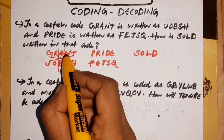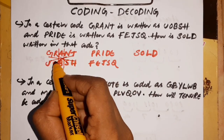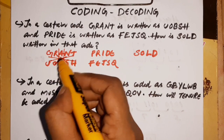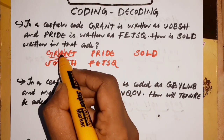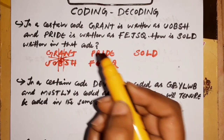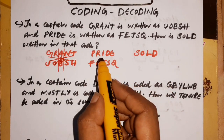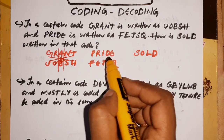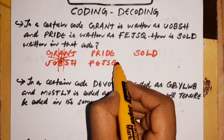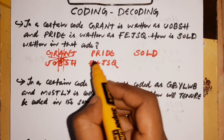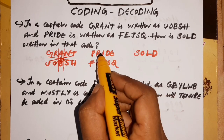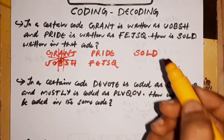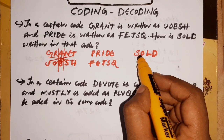That gives N. The next letter is O, and then B. So this is simple. For PRIDE, you can confirm: P→Q, E→F, I→J, R→S, D→E. That's why this pattern is easy to see.